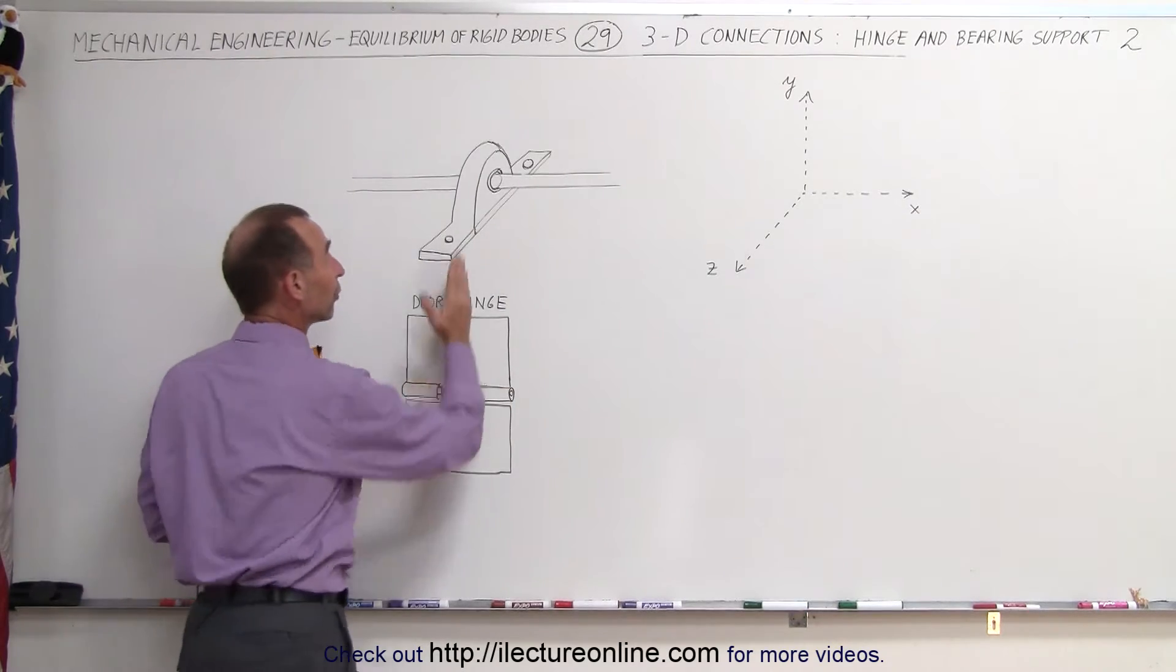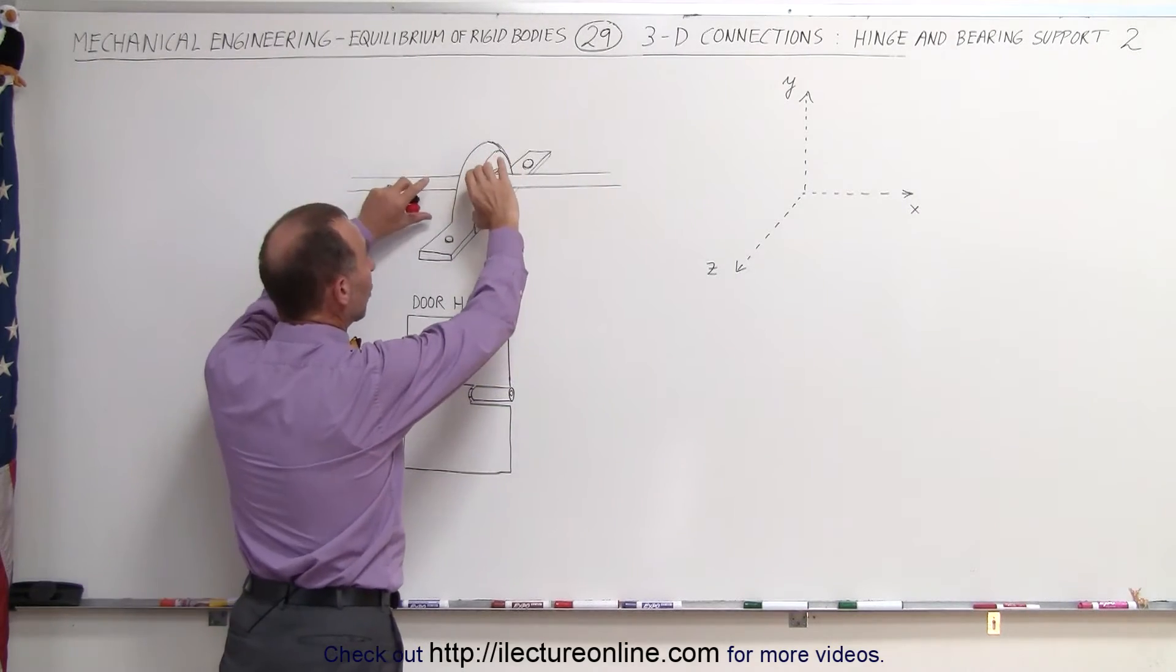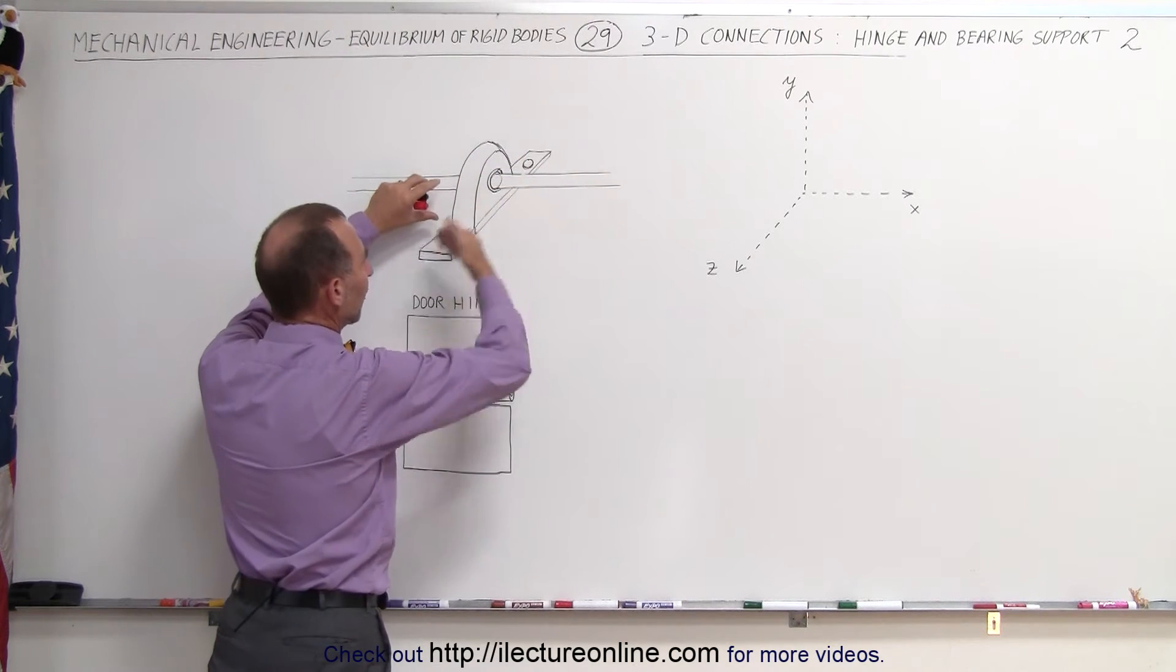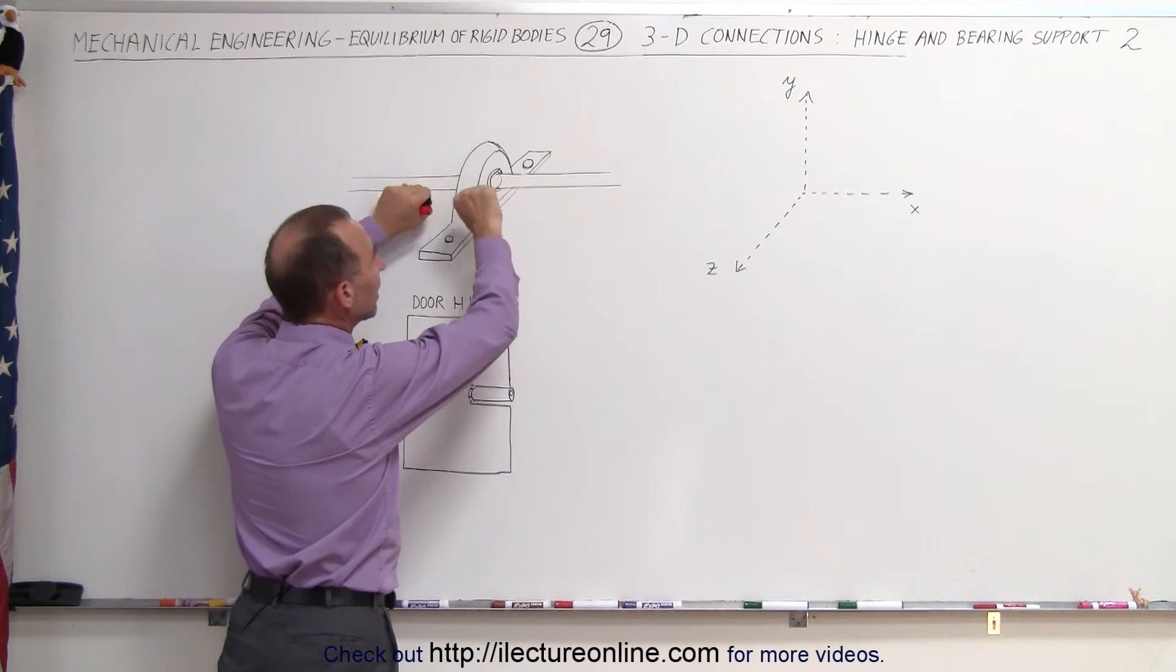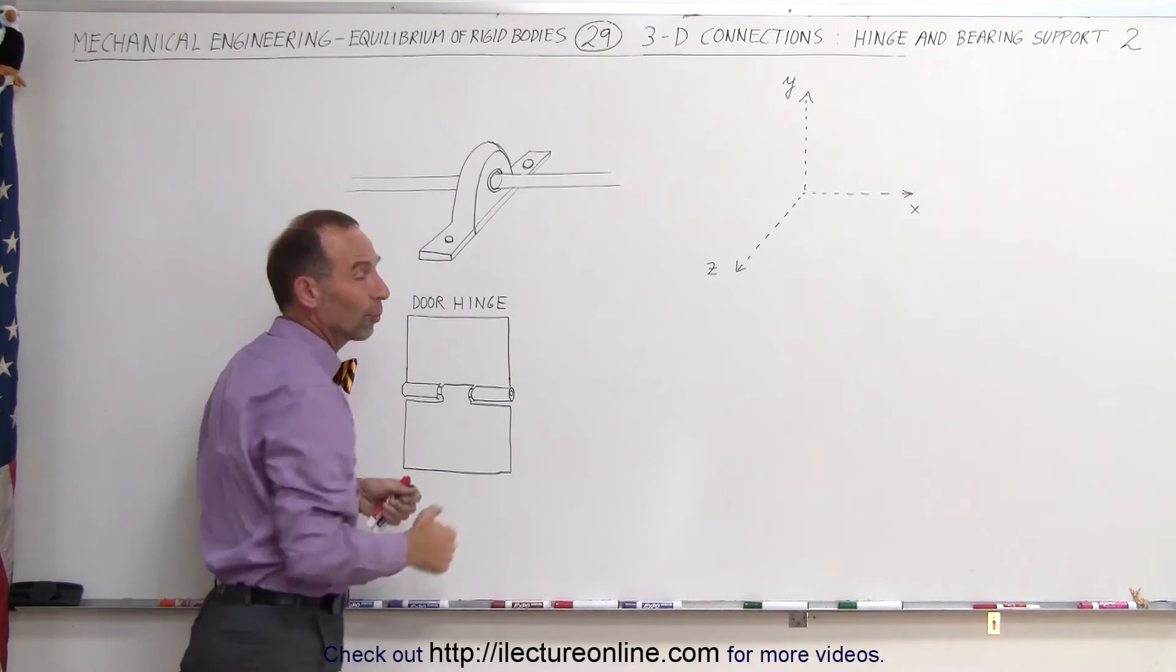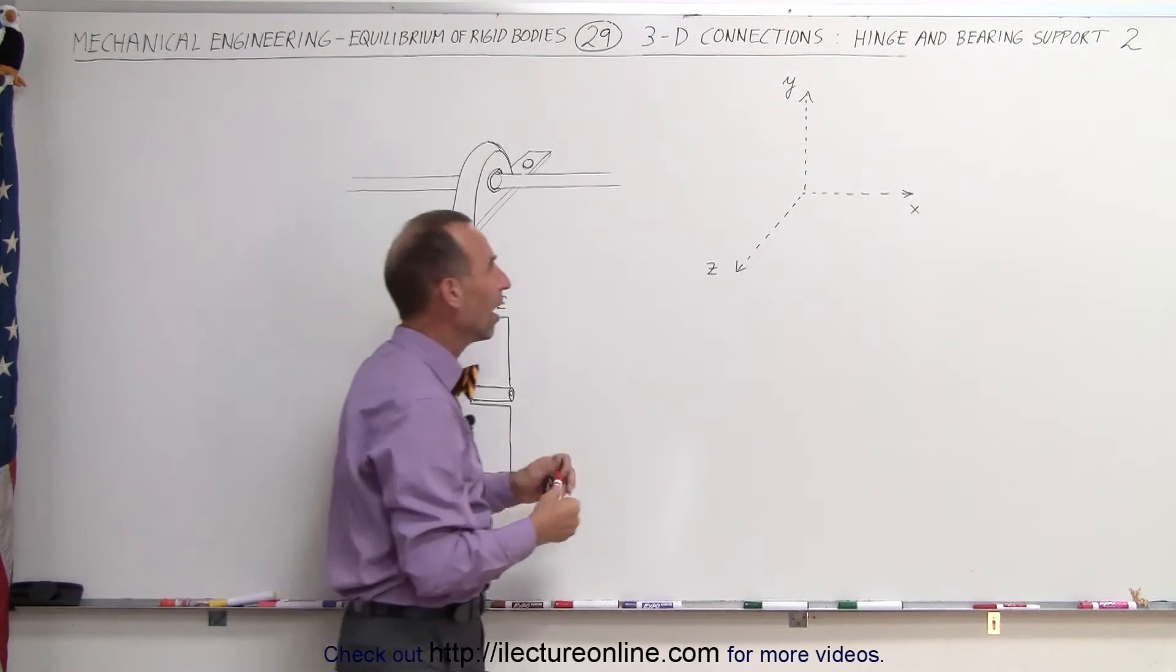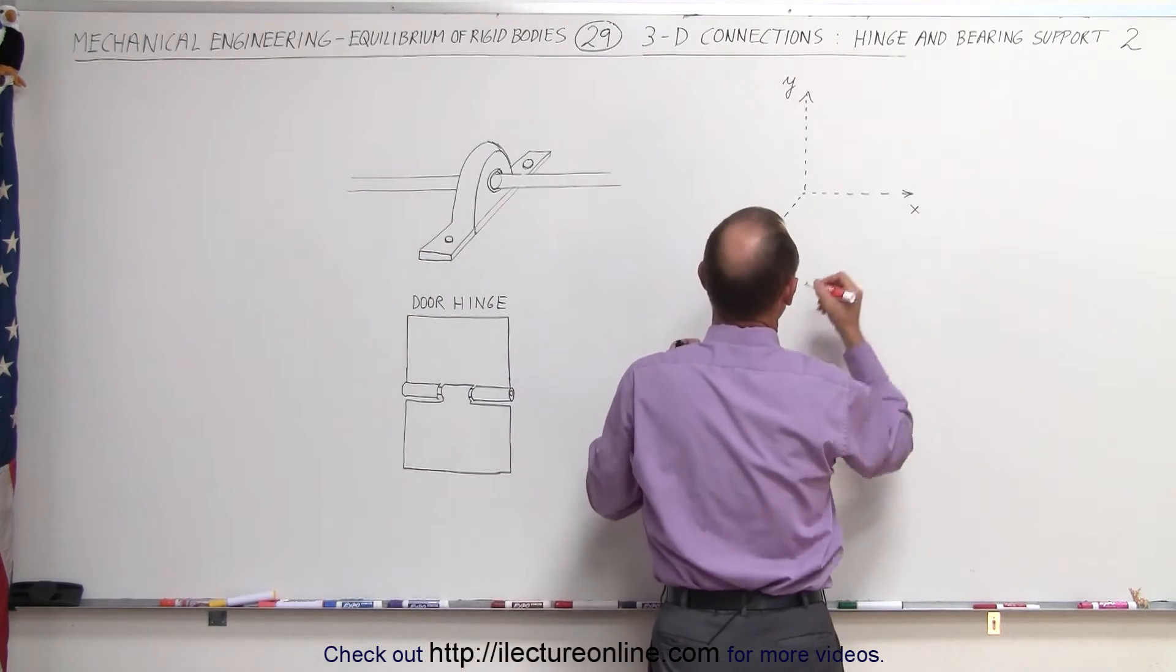So we have a constraint in the vertical direction because the support holds it in the vertical direction, we have a support in the Z direction and now we also have support in the X direction so we create a triad of forces on a hinge and bearing support like this.